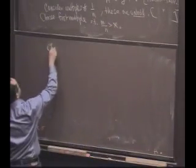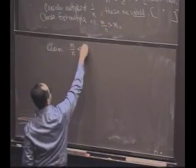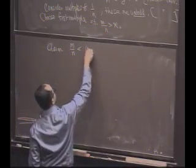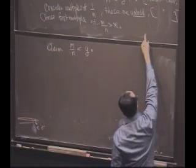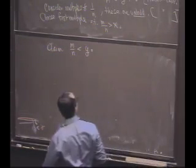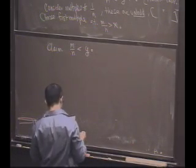And so now I claim m over n is, in fact, also smaller than y. That is, that first red point actually has got to live between x and y. It won't also be beyond y. Why is that?